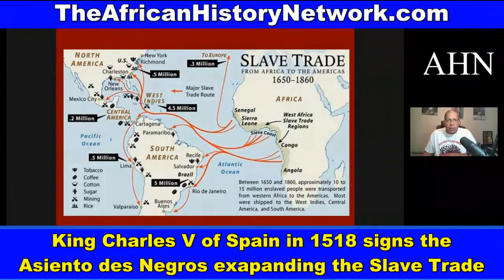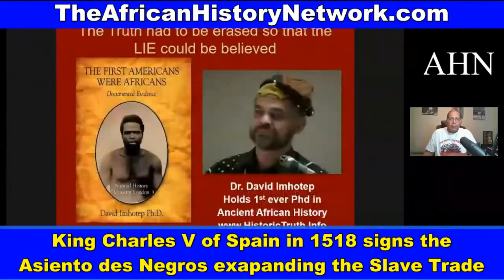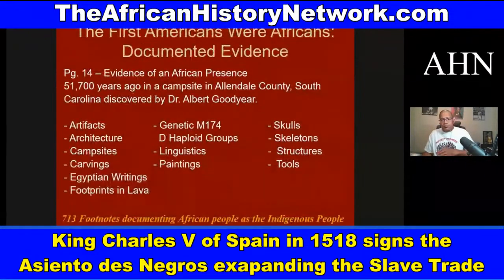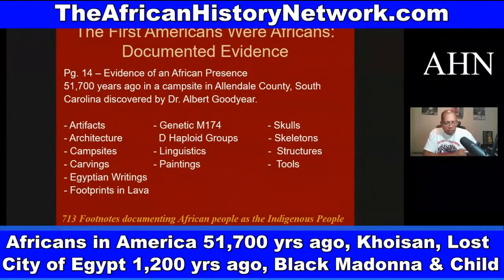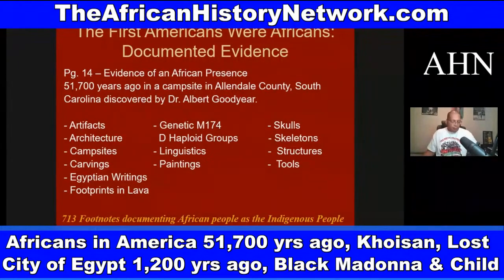We'll look at work from Dr. David Mhotep and archaeological discoveries showing an African presence in this country dating back at least 51,700 years ago. On page 14 of his book, he deals with the discovery from Dr. Albert Goodyear in 2004, where in Allendale County, South Carolina, they found 13 different types of evidence thoroughly documenting African presence dating back at least 51,700 years ago.